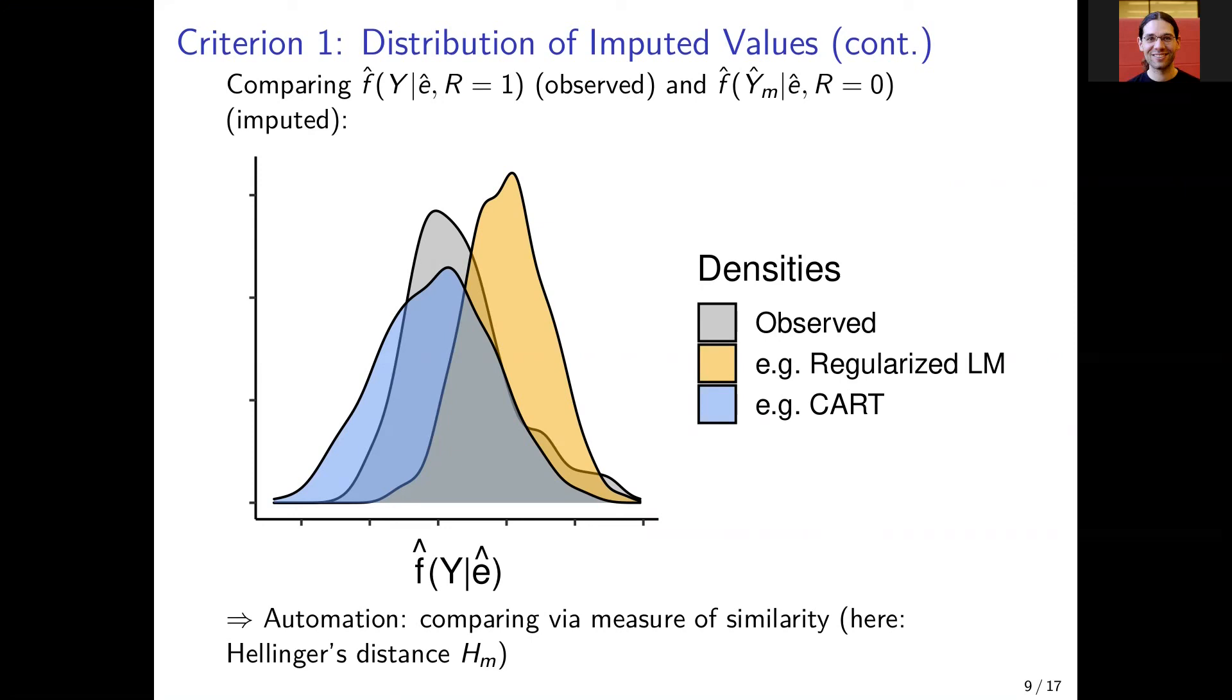On yellow, we get a potentially imputed density from regularized linear models, for example. In blue, we get a density that comes from CART, for example.